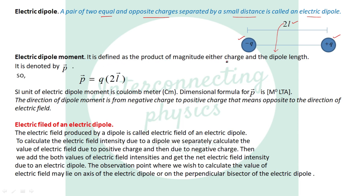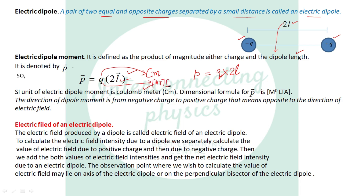What is electric dipole moment? It is defined as the product of the magnitude of either charge and the dipole length. We write just the magnitude of the charge — we don't write the sign — multiplied by the dipole length. This is the electric dipole moment, denoted by small p, and it is a vector quantity. The SI unit is coulomb-meter, and the dimension formula for p is M⁰L¹T¹A¹, because for charge the dimension is AT and for length it is L.